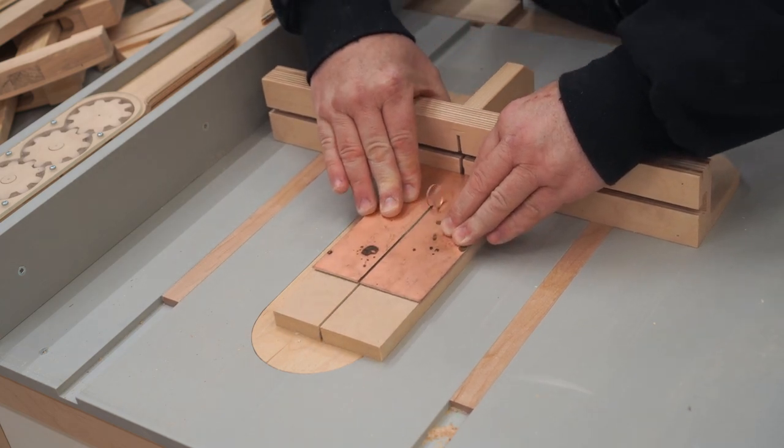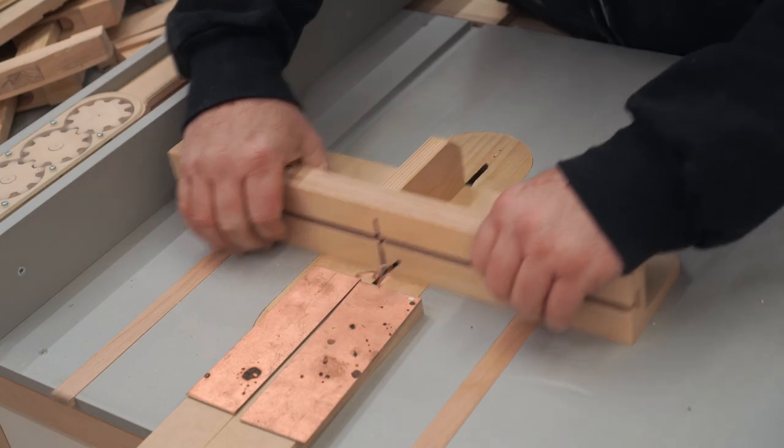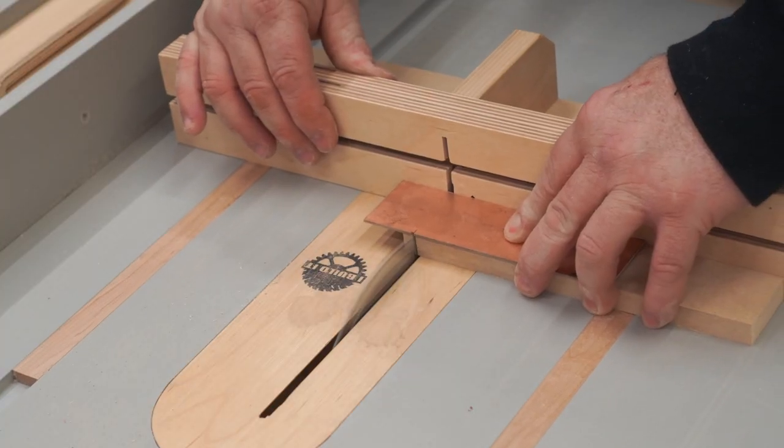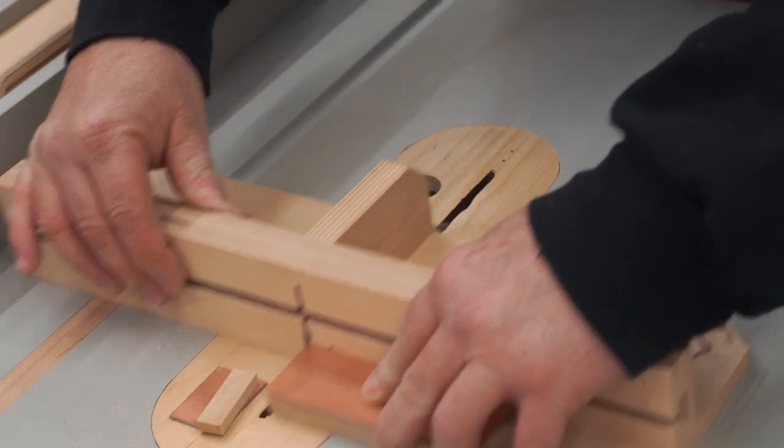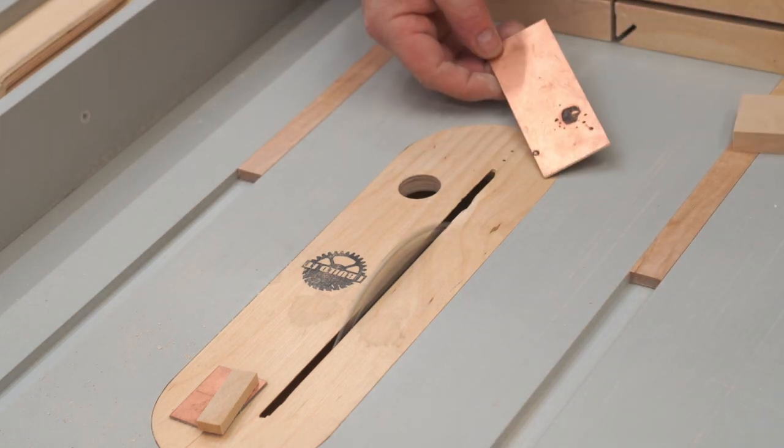Next step is to cut the copper clad board down to the correct size, and I've got the board set on a piece of MDF so that it won't slide underneath the sled as I'm pushing it through.